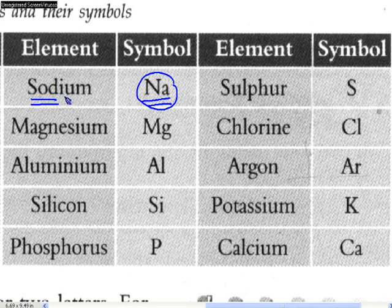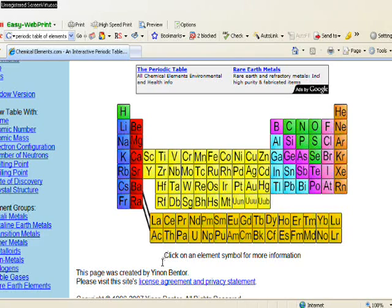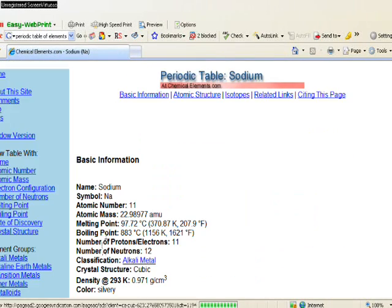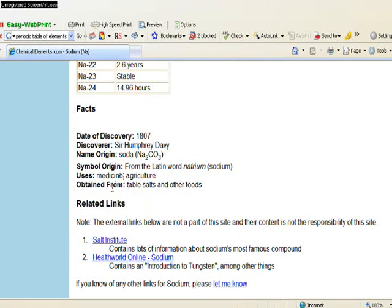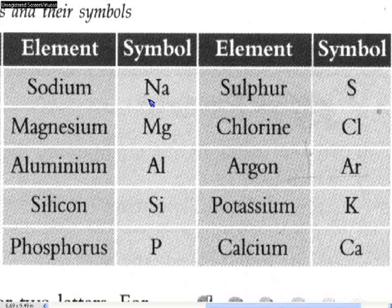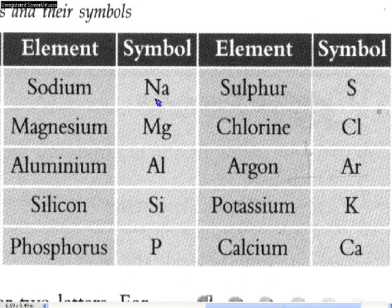Now I'll refer to the periodic table. Now this is the periodic table from a website. I'll click on sodium and this is the information on sodium. You will notice that the symbol originates from the Latin word natrium, N-A-T-R-I-U-M. So the symbol for sodium is Na because we are following the Latin name for sodium.